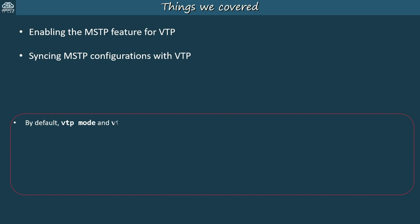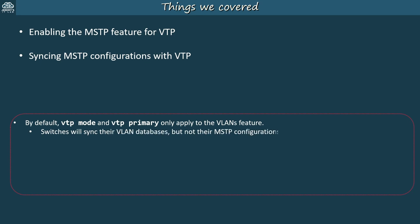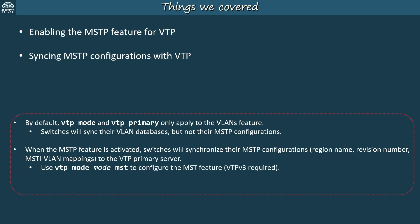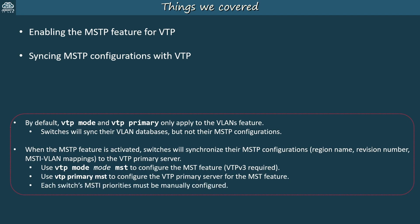Key review points: by default, the VTP mode and VTP primary commands only apply to the VLANs feature and don't enable the MSTP feature for VTP — switches will sync VLAN databases but not MSTP configurations. When the MSTP feature is activated, switches sync their MSTP configurations to the VTP primary server using 'VTP mode [mode] MST.' This only works in VTP V3; versions 1 and 2 can't sync MST settings. Don't forget to use 'VTP primary MST' for the primary server. Each switch's MSTP priority values must be manually configured — VTP can only sync the region name, revision number, and VLAN mappings.